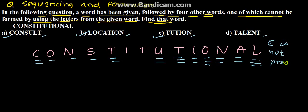So talent cannot be formed. Therefore option D. We have answer option D, talent, which cannot be formed because E is absent, which is the solution for the given problem.